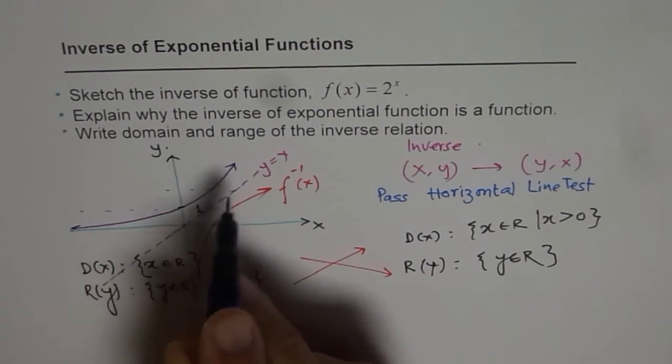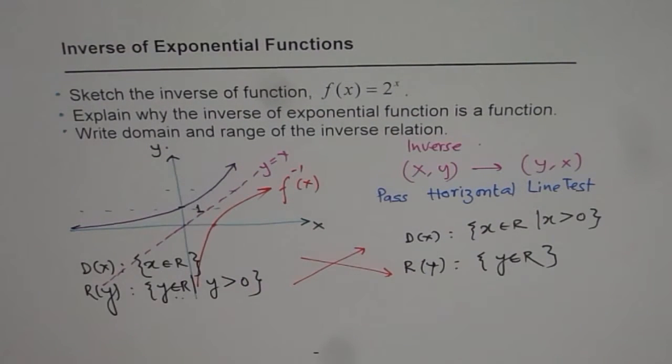The function is always increasing, just going in one direction, so it passes the horizontal line test. And since it passes the horizontal line test, its inverse will always be a function.